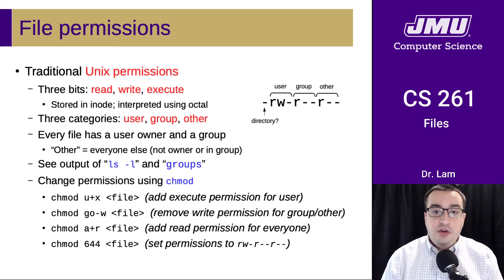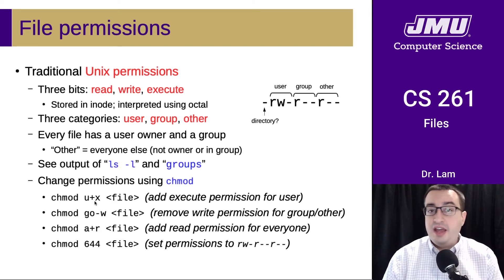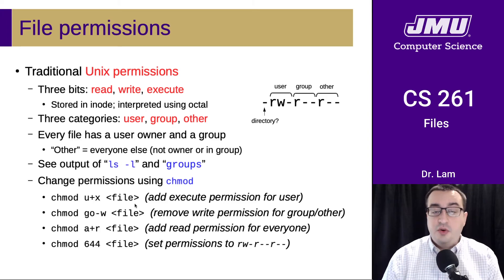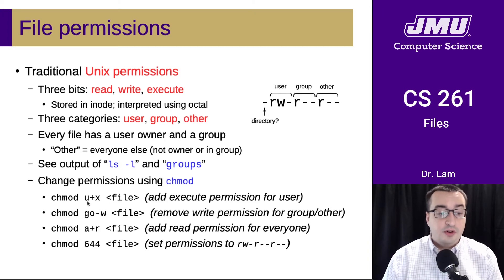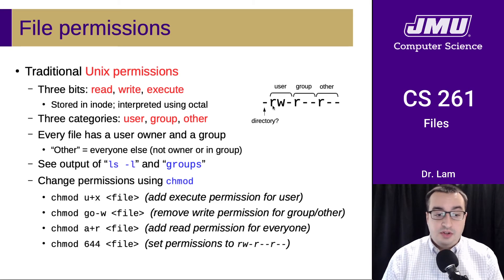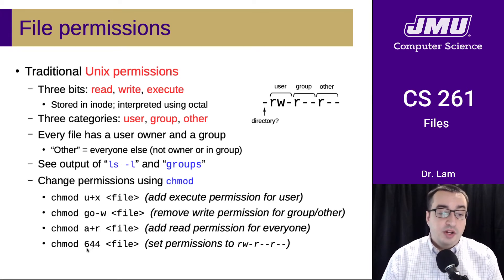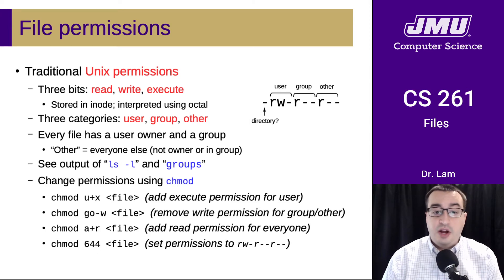You can change permissions of a file using the chmod command. There are a variety of ways to call it. For example, u+x will add execute permissions for the user — the plus means add, so this means user add execute, adding execute permission for the owner. You can also remove write permission for the group and other, or add read permission for everyone using 'a'. You can also give chmod an octal value to set permissions directly. For example, permission 644 corresponds to read-write for the user, just read for the group, and just read for everyone else.